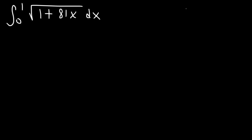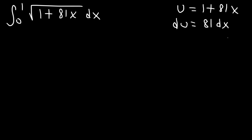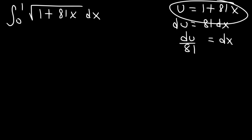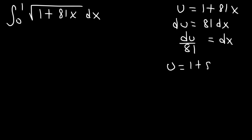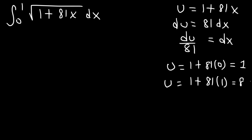Now let's use u substitution. Let's make u equal to what's on the inside of the square root: 1 plus 81x. Therefore du is going to be 81 dx, and if we solve for dx, it's du divided by 81. Now we need to change our a and b values. Plugging in 0 gives 1 plus 81 times 0, which is 1. Plugging in 1 gives 1 plus 81 times 1, which is 82. So those are the new limits of integration.